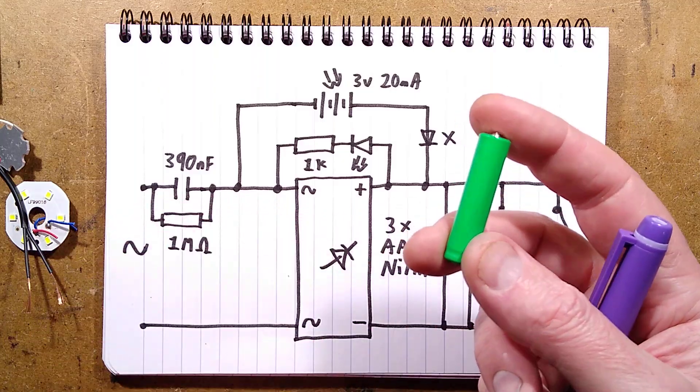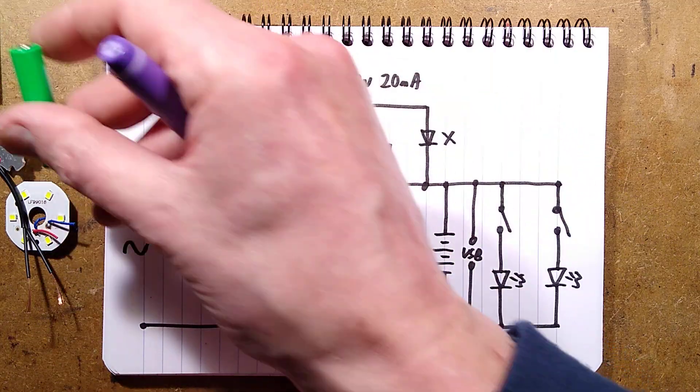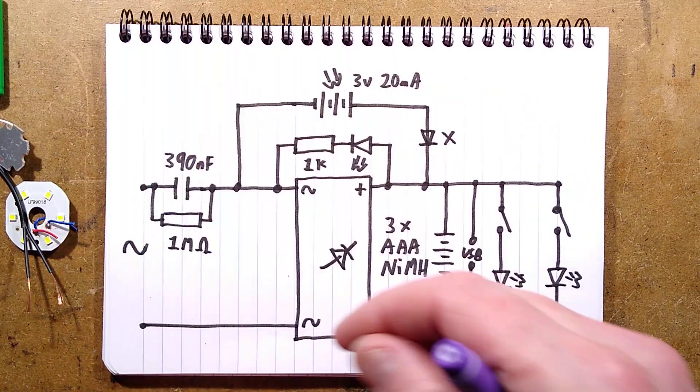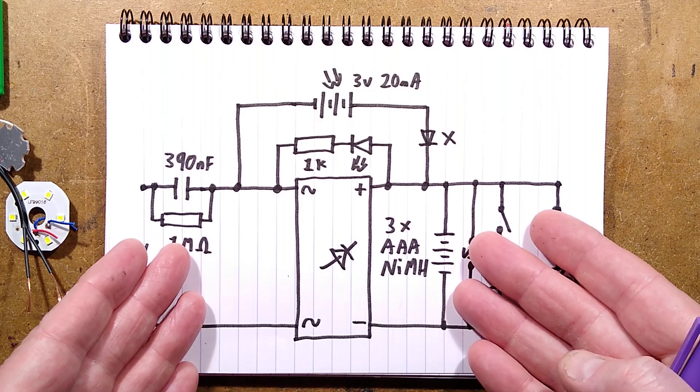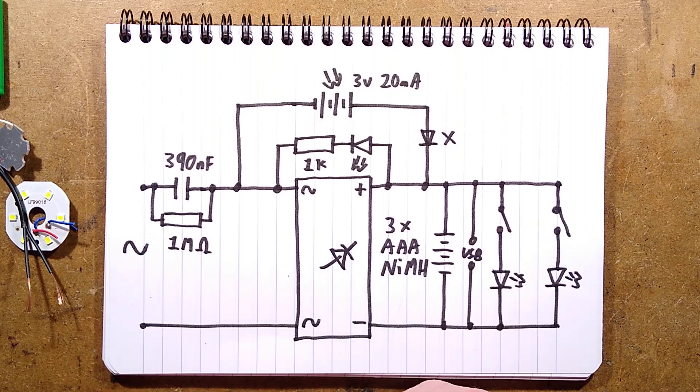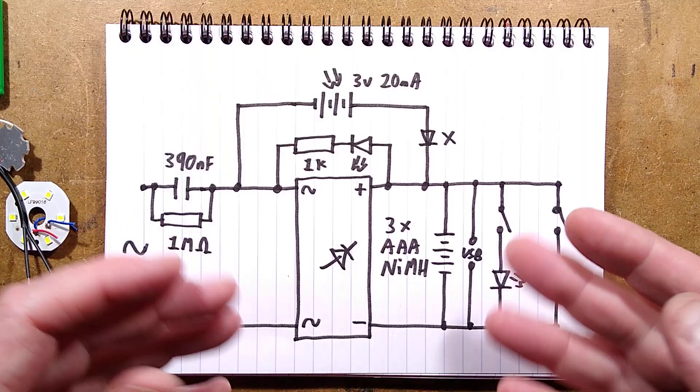Not sure what these are. The voltage seems quite high out of the packet for nickel metal hydride. I have a horrible feeling they're alkaline or zinc chloride that have just been badged up to look like that.